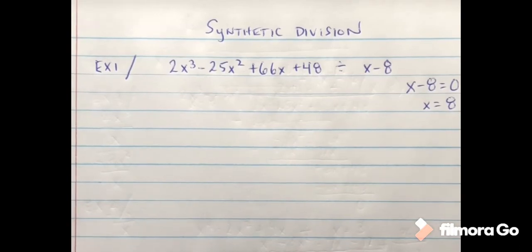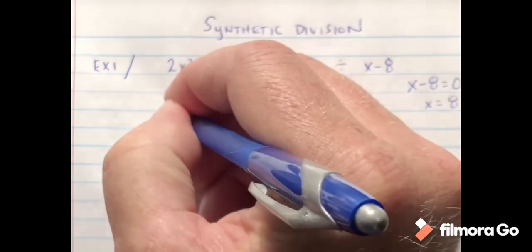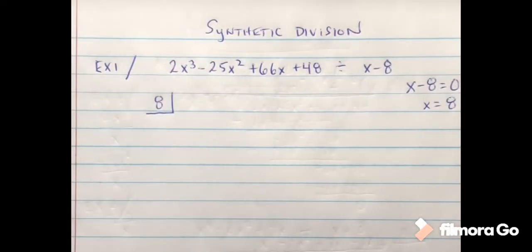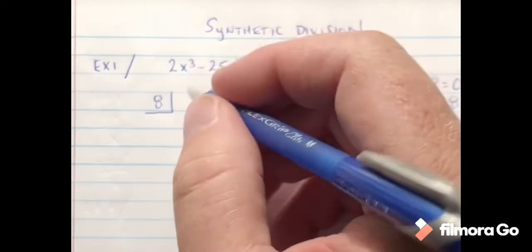So in this case we're going to put 8 in the box. We're then going to list the coefficients of each of the variables. So I've got a 2, I've got a negative 25, I've got a positive 66.